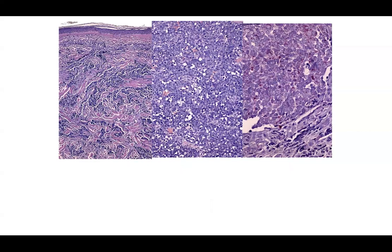Moving on — do you think this is neoplasm or inflammatory? On the left, the lymphoid population appears to be dissecting through collagen bundles, suggesting a possible interstitial growth pattern neoplasm. The middle and right panels show enlarged epithelioid cells with speckled chromatin, molding together — a big blue tumor. What's your differential, and which immunohistochemical stain would you use?